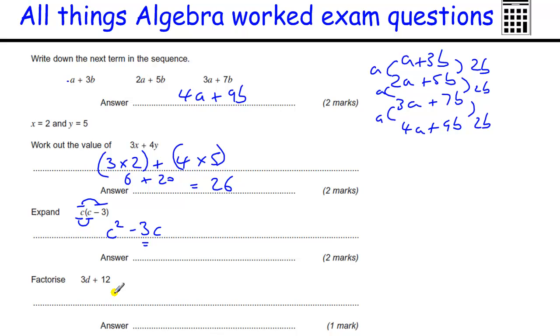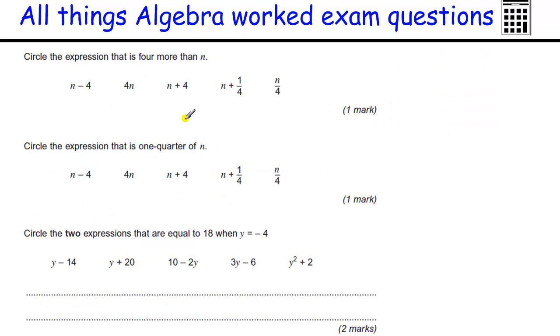Factorize means put the bracket back in. So we're looking to put a bracket in here. This is a plus sign here, so that stays the same. And then we've got to figure out what thing goes into both of these. Well, there's only one letter here, there's a D, so there's no letters that go into both of these. But there's a number, 3 and 12. And the biggest number that goes into both 3 and 12 is 3. Now, to figure out what goes in the brackets, what do you times 3 by to get 3D? We times by D. And what do you times 3 by to get 12? Well, that's 4. So 3 lots of D plus 4.